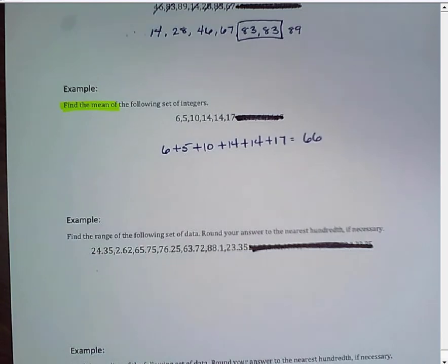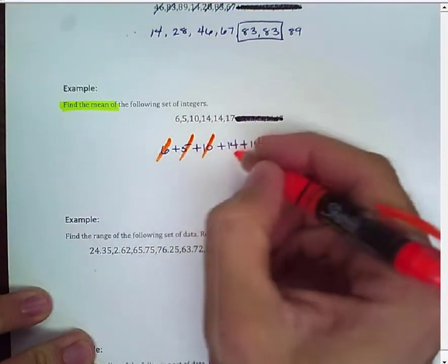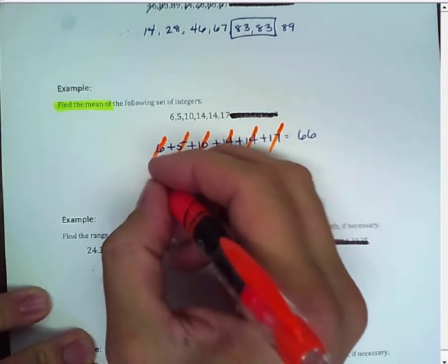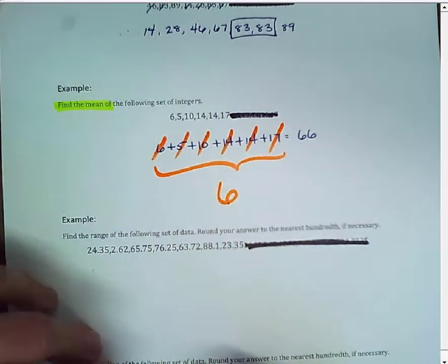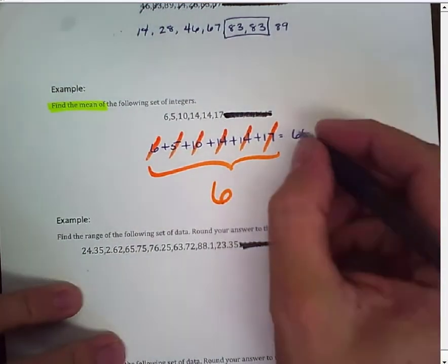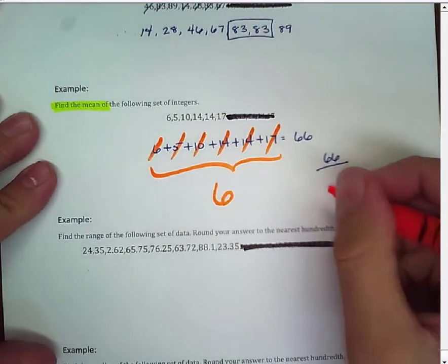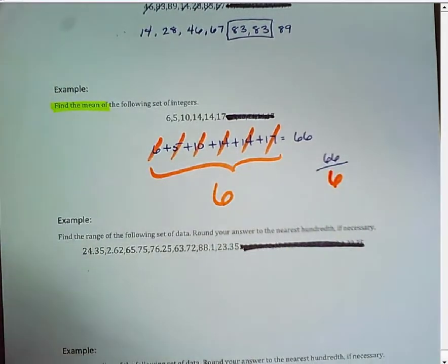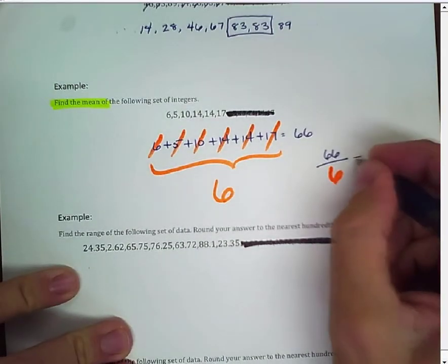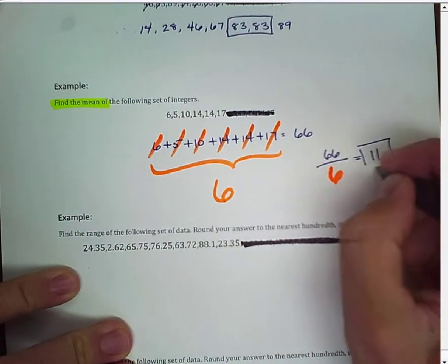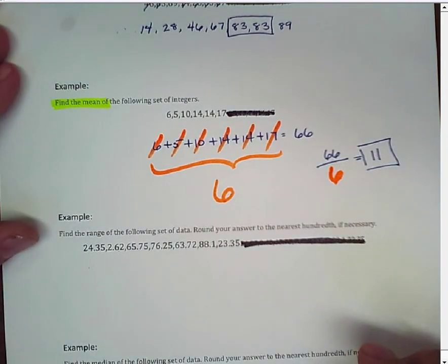Now, how many numbers do I have? Well, looking at this, I have 1, 2, 3, 4, 5, 6. So, I have 6 total numbers. Well, then to find my average, I'm going to take 66, divide it by my total number of numbers, which is 6. And then I get, of course, that 66 divided by 6 is the number 11. So, I get that my average here is 11.